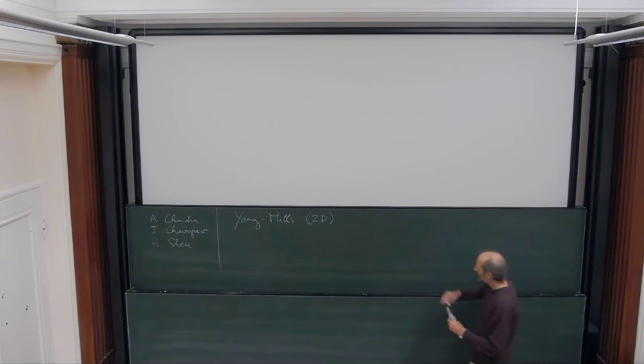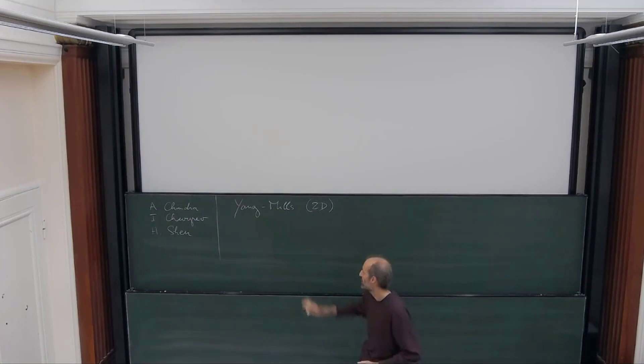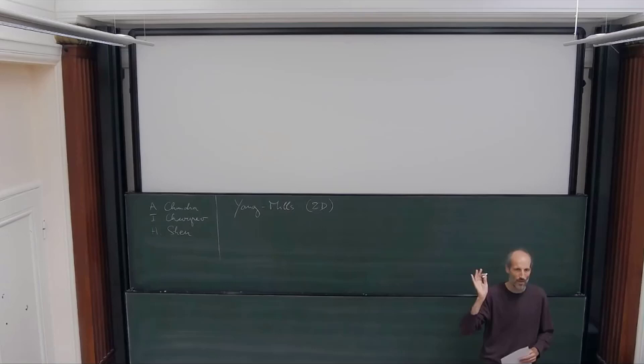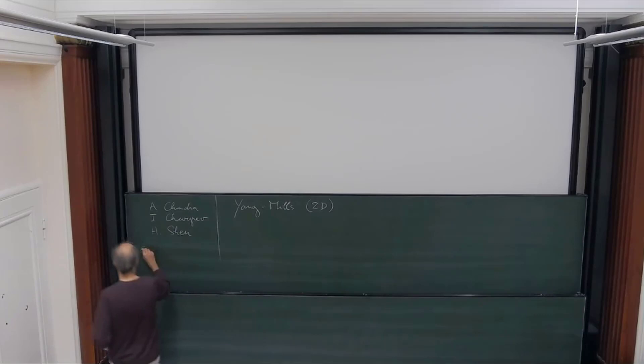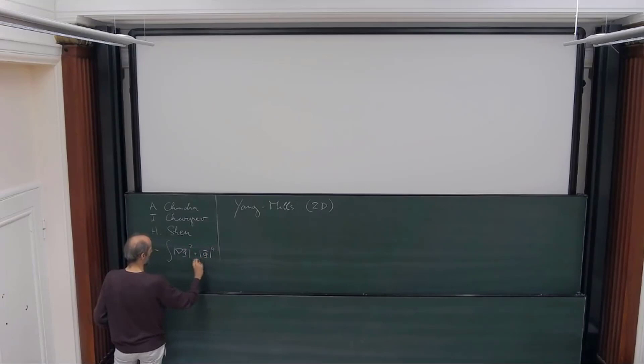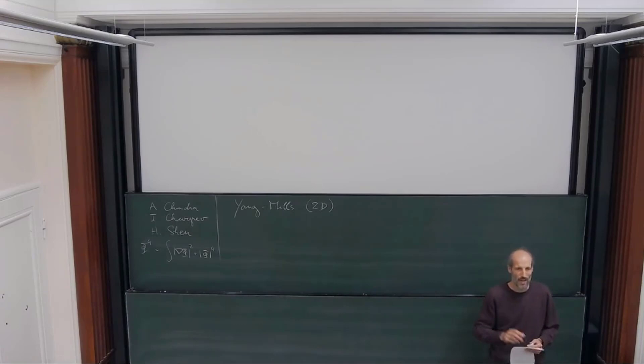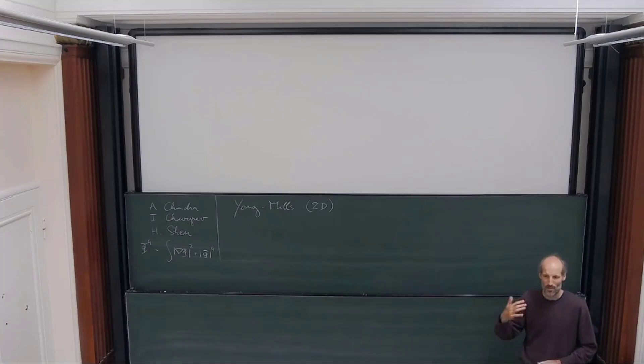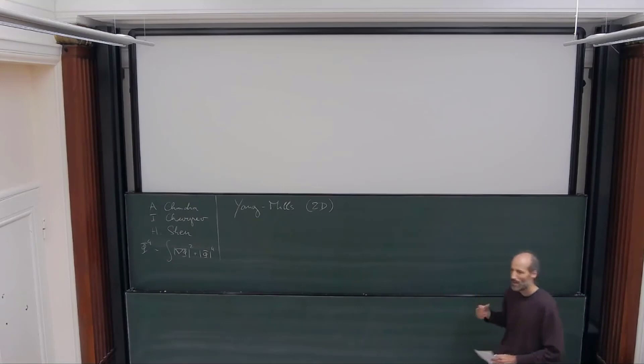The basic object — Yang-Mills is kind of a quantum field theory. For a quantum field theory, you want something like an action. In the case of phi-4, the action would be something like the integral of (gradient phi)^2 plus phi^4. You want some kind of action, and then once you have an action, there's a natural measure that goes with it, which is formally e to the minus the action. And there's also a natural dynamic, which would be some sort of natural dynamics that has that measure as invariant measure.